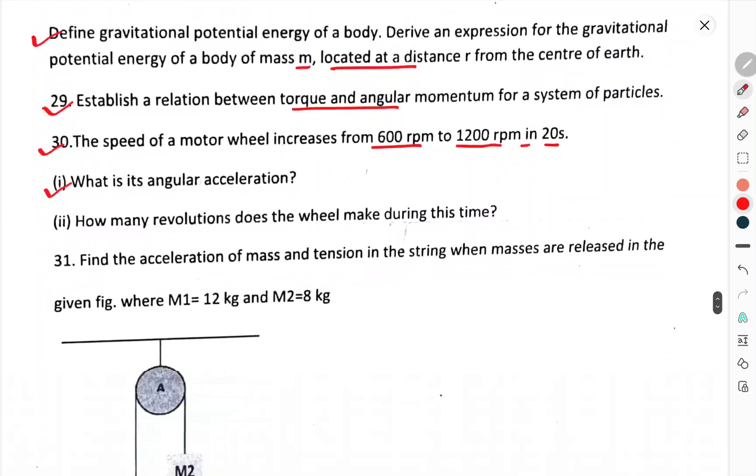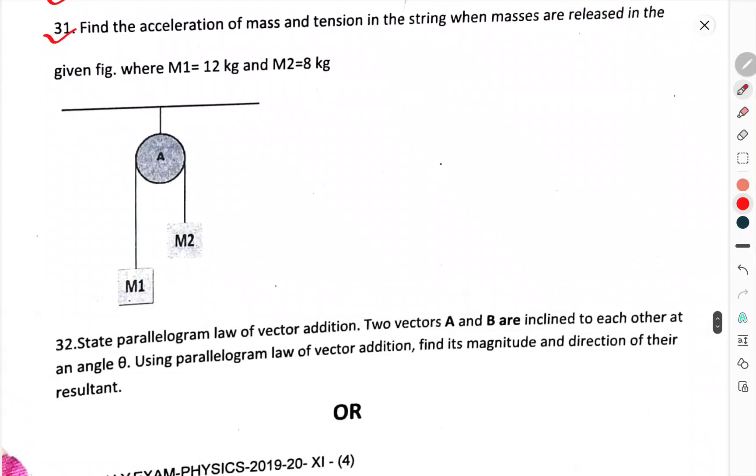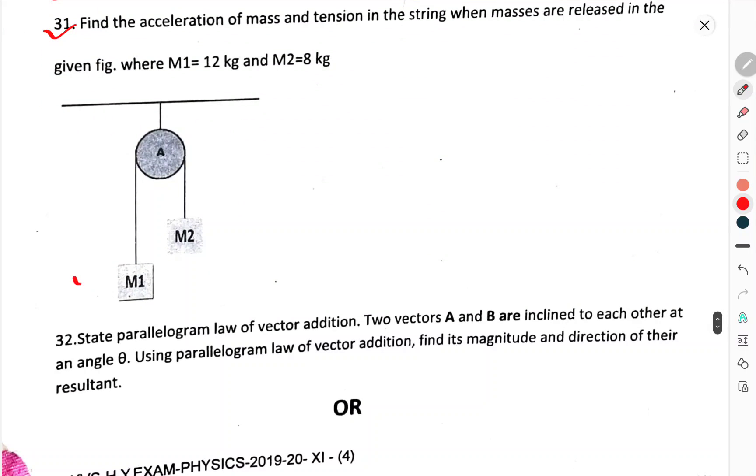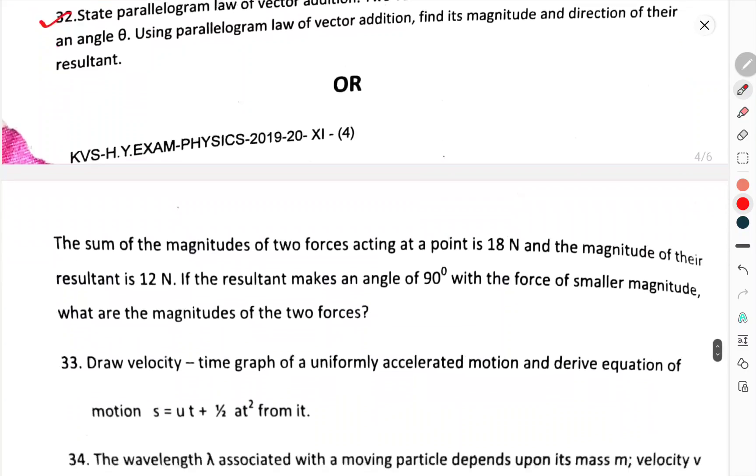Question number 30. A speed of motor wheel increases from 600 round per minute to 1200 round per minute in 20 seconds. What is the angular acceleration? How many revolutions does the wheel make during this time? Question number 31. Find acceleration of mass and tension in string when the masses are released in the given figure M1 equals 12 kg and M2 equals 8 kg. This figure you can see here. Question number 32.